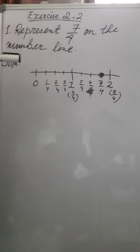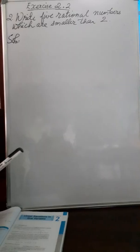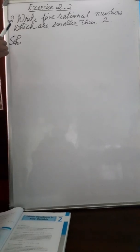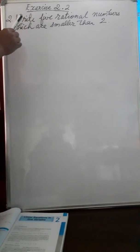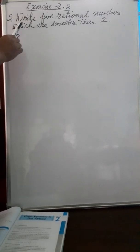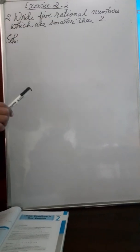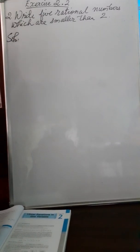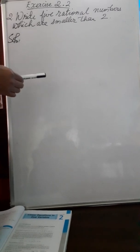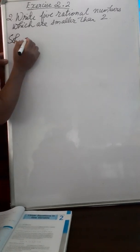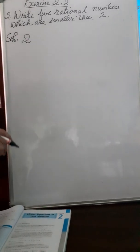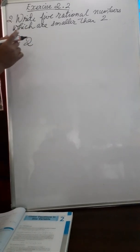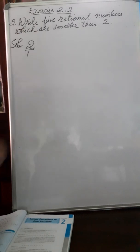The next number, number 2: write 5 rational numbers which are smaller than 2. There are infinite rational numbers which are smaller than 2. The number 2 is the same as 2 by 1.